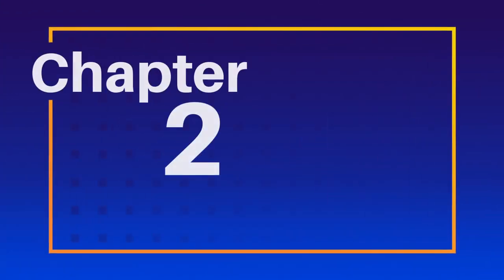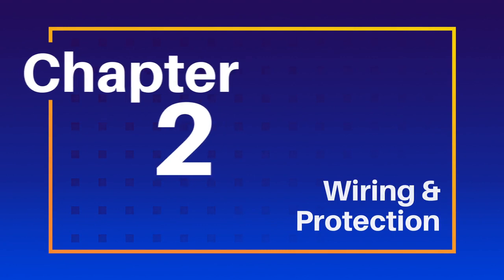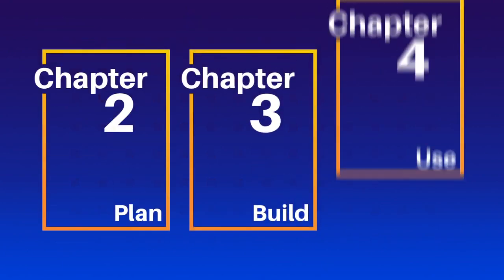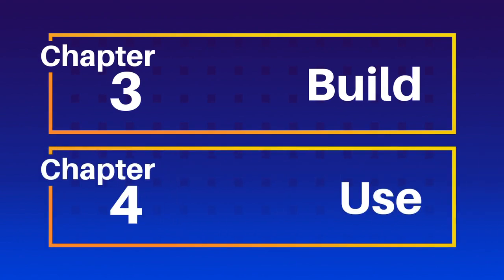In this lesson, we'll be looking at changes that occurred in Chapter 2 during the 2017 to 2020 code review cycle. This is an important chapter since it provides foundational requirements for many applications. I like to view the next three chapters as the plan, build, and use chapters. This is the planning chapter. Chapter 3 is build, and then Chapter 4 is use.